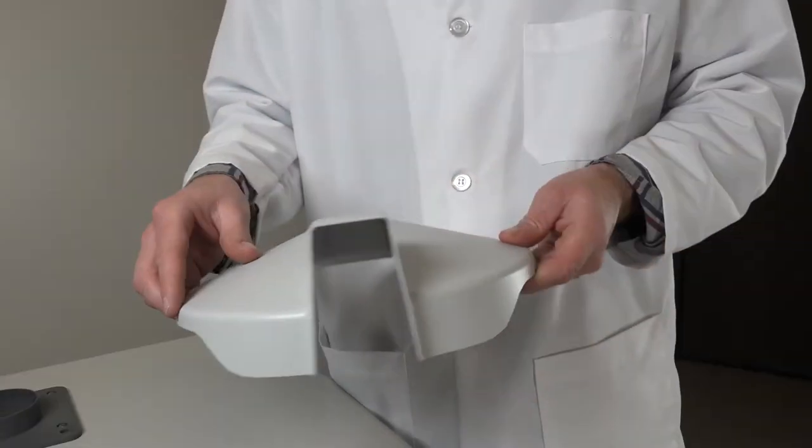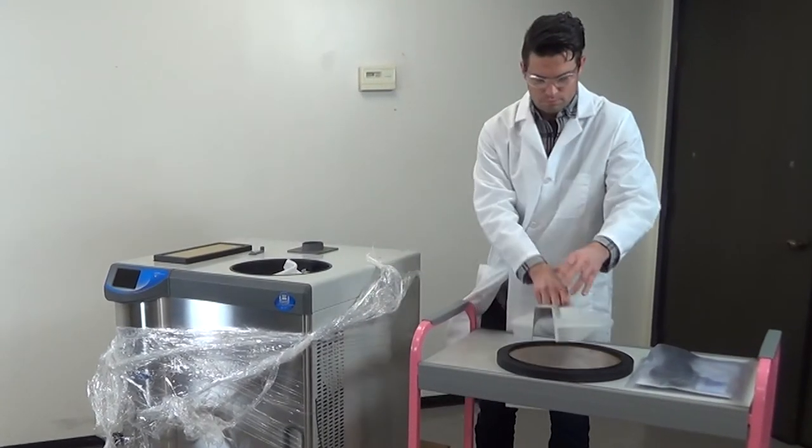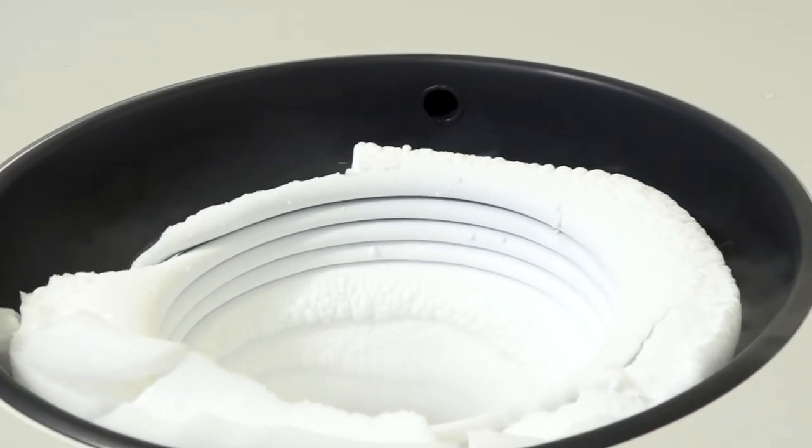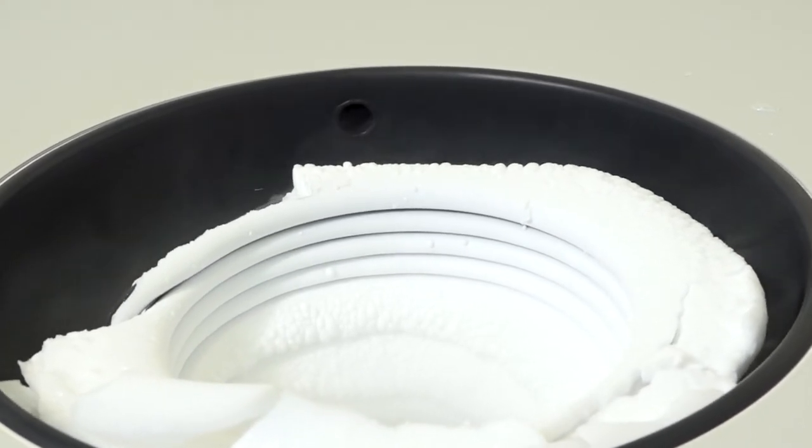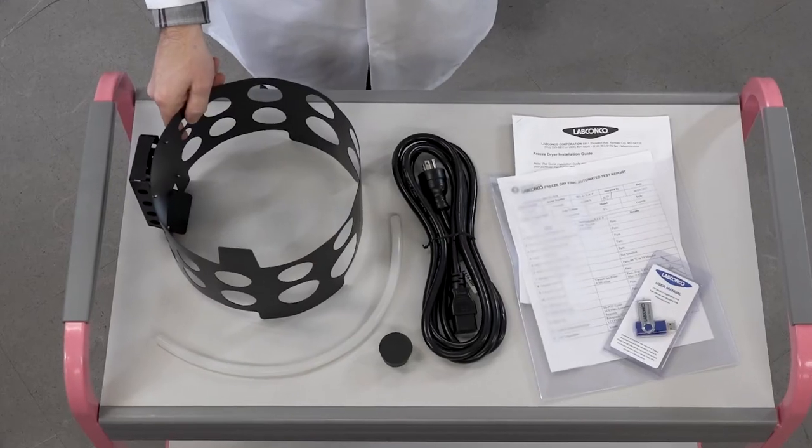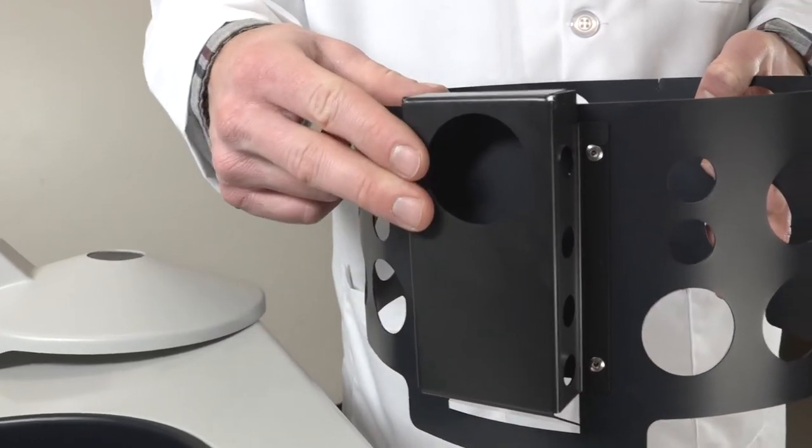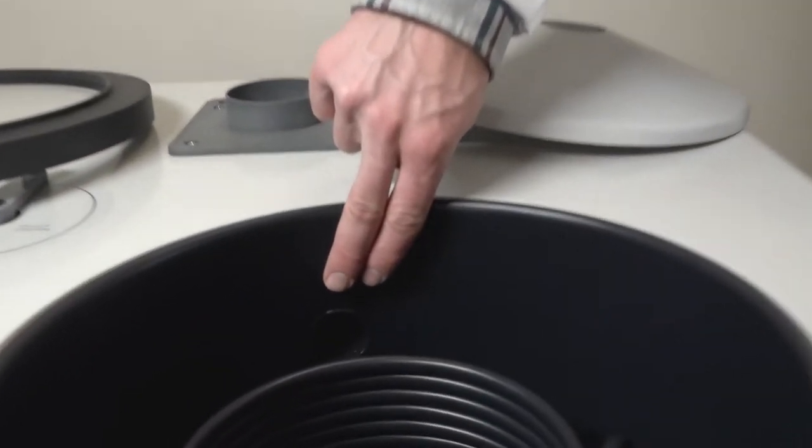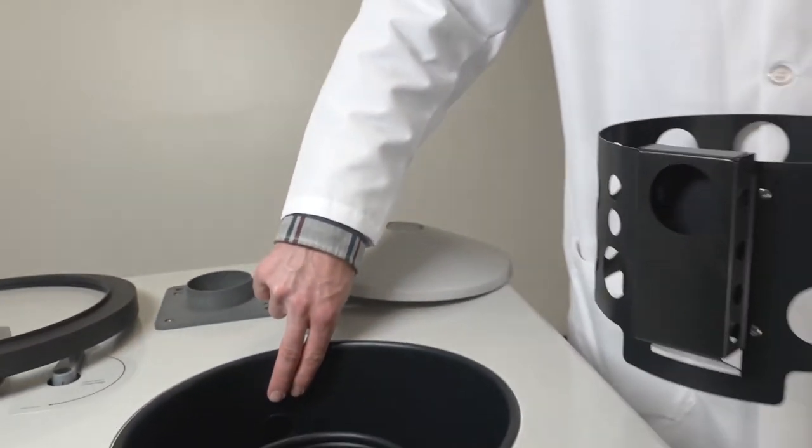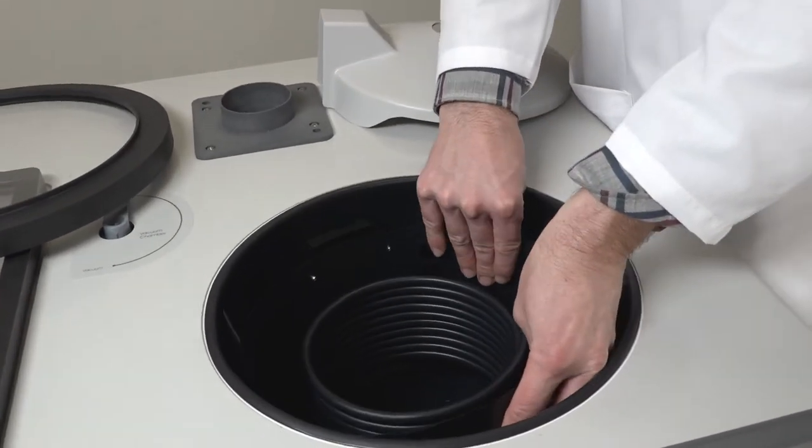Now let's install the baffle. The baffle is shipped with 6 and 12 liter negative 84 degree Freezones and 18 liter Freezones. The baffle is designed to evenly distribute collected ice over the entire collector coil. Positioning the baffle properly ensures maximum ice loading capability. For the 2-piece 6 and 12 liter baffle, align the 1 and 3/4 inch hole in the rear channel of the baffle with the 1 and 1/2 inch vacuum port in the sidewall of the collector chamber. Place the baffle into the collector chamber. The cylinder should be concentrically centered with the collector chamber.